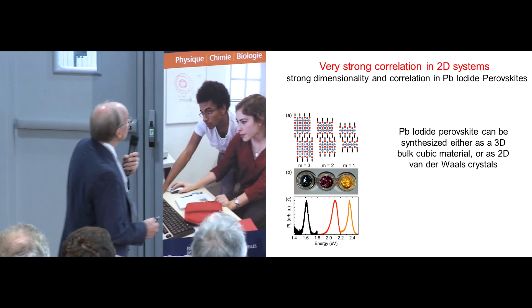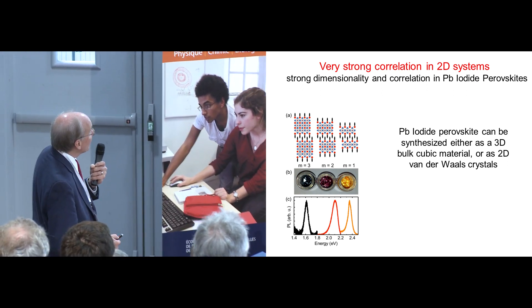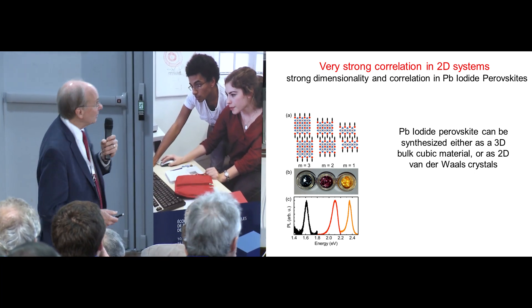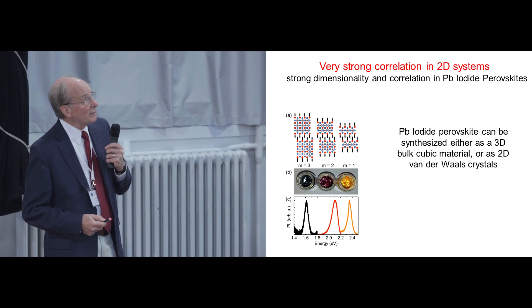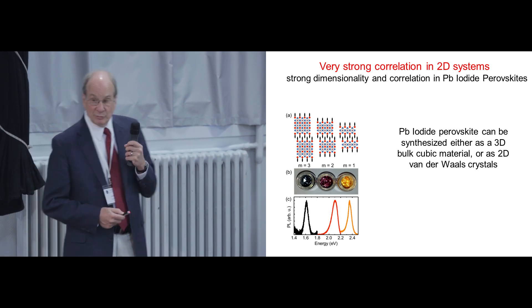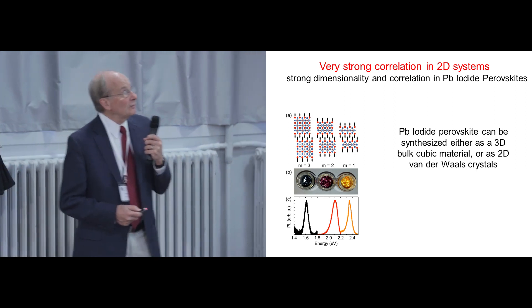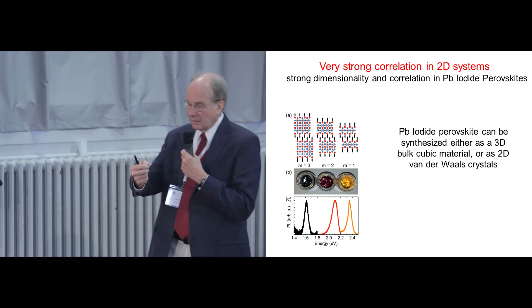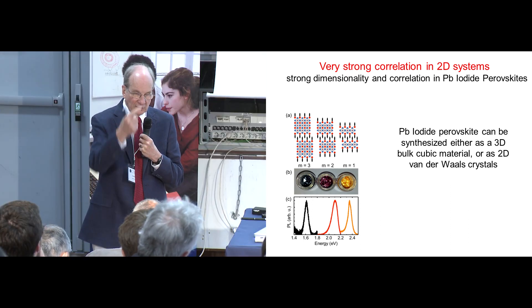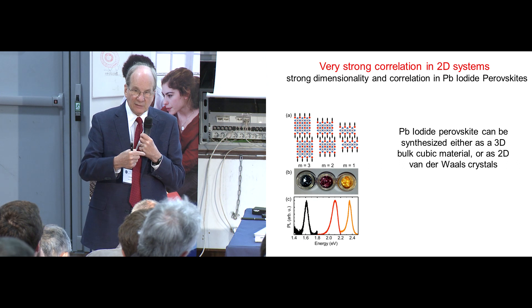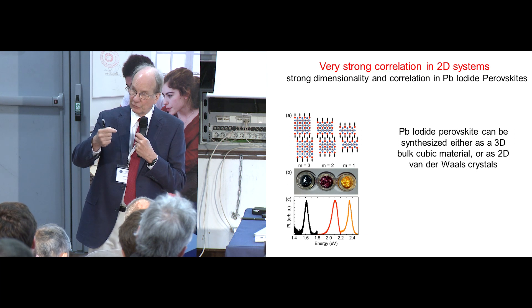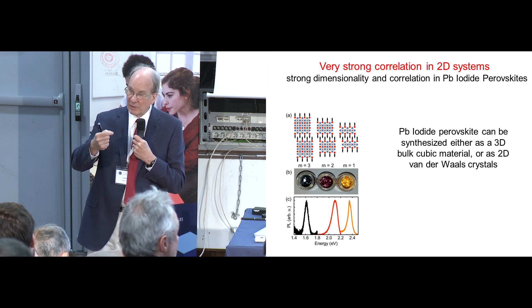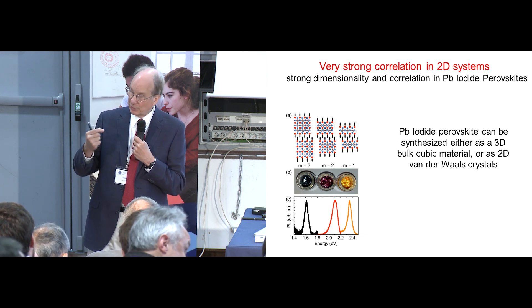One of them is these lead iodide perovskite systems that have become very popular recently in solar cell design. So lead iodide perovskites form a cubic three-dimensional material. This is a system in which there's a lead atom surrounded by six iodines. And the charge is balanced by methyl ammonium ions in interstitial places. A cubic three-dimensional bulk material.